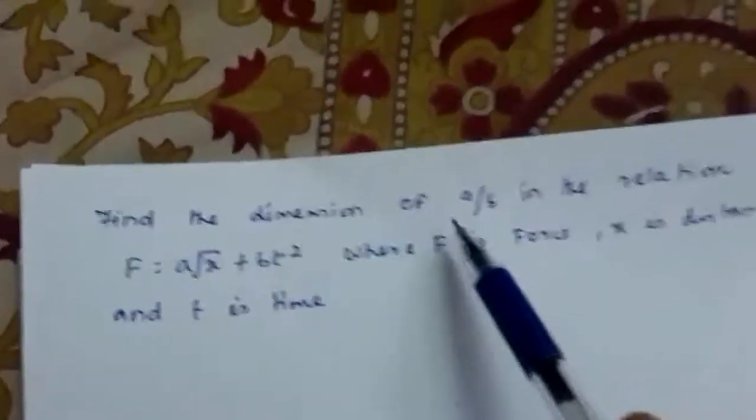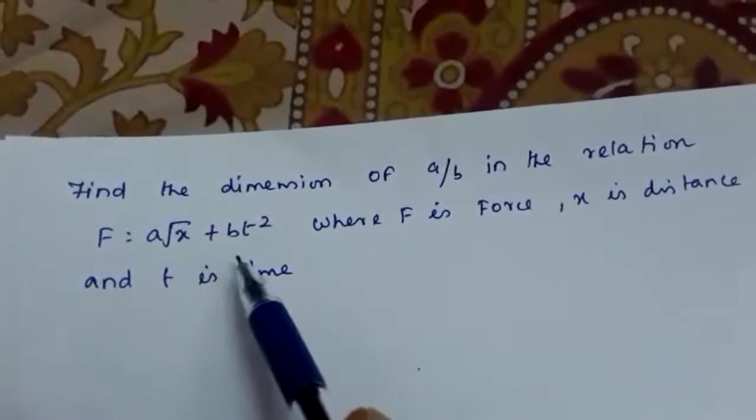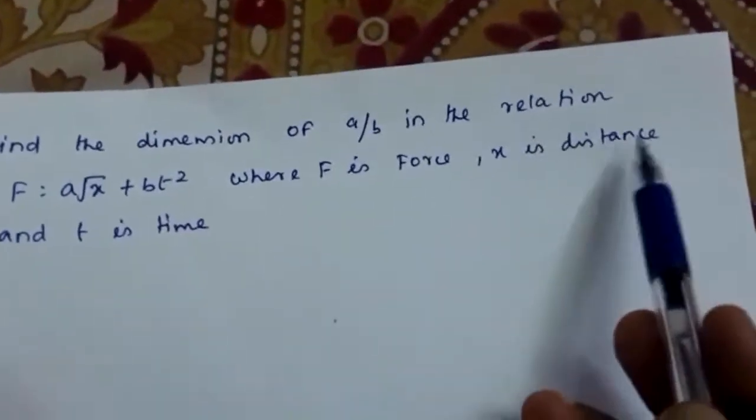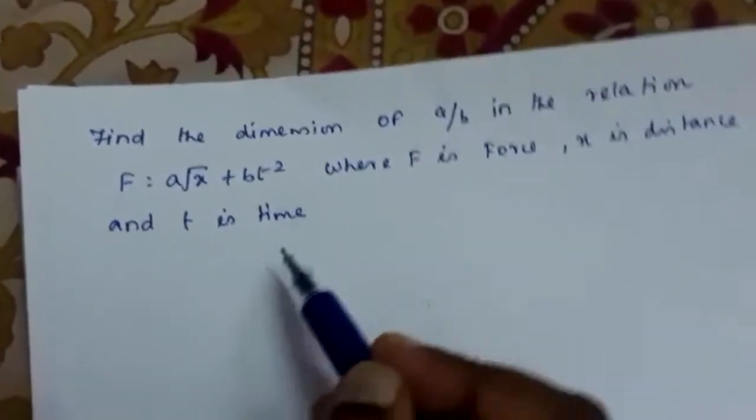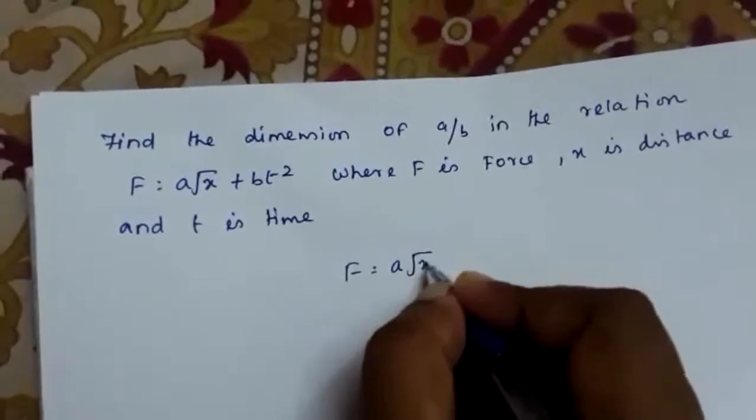Find the dimensions of a/b in the relation F = a√x + bt², where F is force, x is distance, and t is time. So F = a√x + bt².